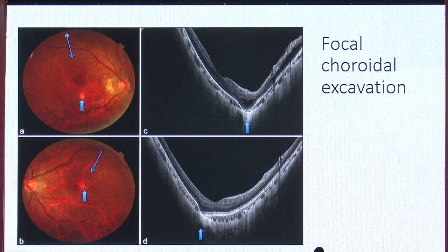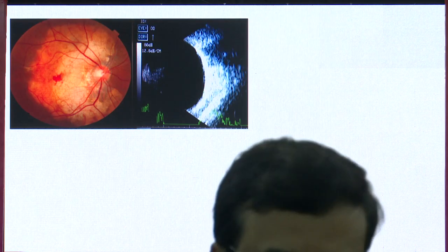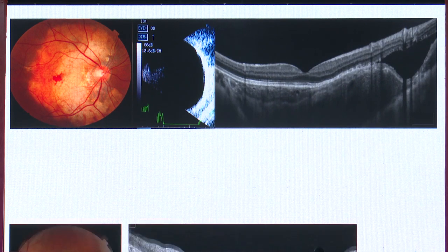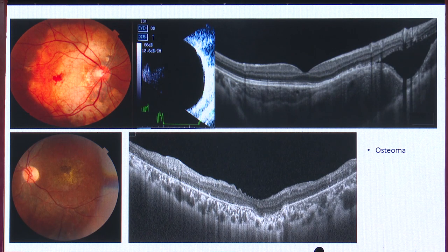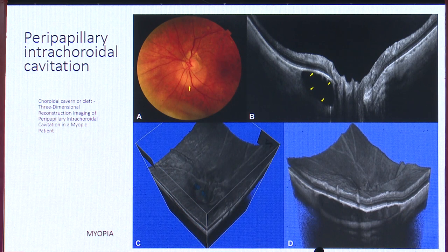Focal choroidal excavation is an ectasia of the choroid due to abnormal development, of unclear etiology. It can be conforming type or non-conforming type, where the retinal layers do not follow the choroidal excavation. These cases are prone to developing CNVM over time and require close follow-up. Although mostly seen in myopia, focal choroidal excavation has also been described in choroidal osteoma, Stargardt disease, and Best disease — whether it is a cause or effect remains unclear. Peripapillary focal choroidal excavation must be differentiated from peripapillary choroiditis, granuloma, peripapillary CNVM, and hemangioma. OCT shows a clear cavity in the choroid, best seen on 3D imaging, consistent with peripapillary intrachoroidal cavitation.